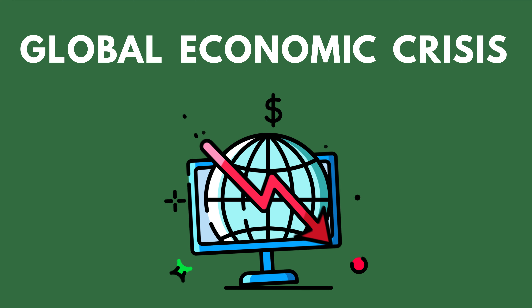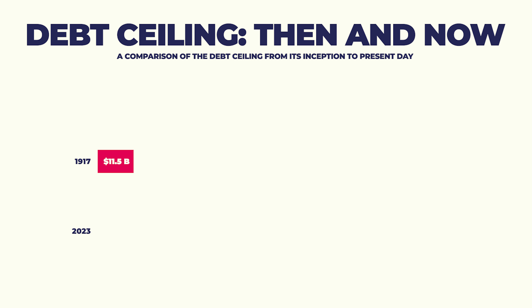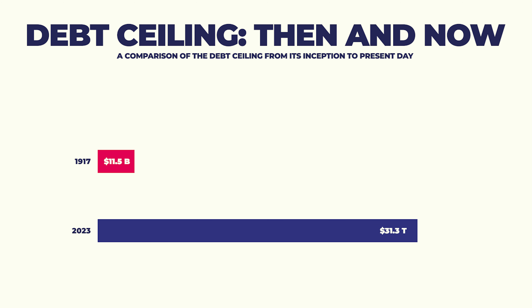Default would lower our national credit rating, increase the cost of our debt, and potentially set off a catastrophic global economic crisis. Due to the risk of defaulting, Congress has basically acted to raise the debt ceiling every single time we approach it, which has created fair criticism that it's not a very effective way to encourage fiscal responsibility. The ceiling has been raised nearly a hundred times since its inception and is now at $31.381 trillion, up from $11.5 billion in 1917.